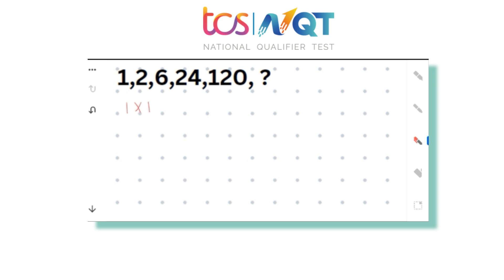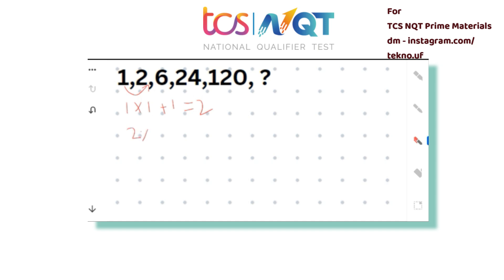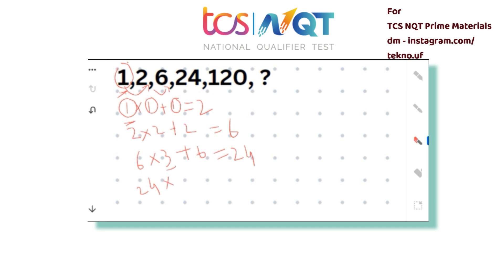Let's represent the series differently: 1 + 1 = 2. Then 2 × 2 + 2 = 6. Then 6 × 3 + 6 = 24. We can see the pattern: each term is obtained by multiplying the previous term by an incrementing integer and adding the previous term itself. So: 24 × 4 + 24 = 96 + 24 = 120. This confirms the pattern.